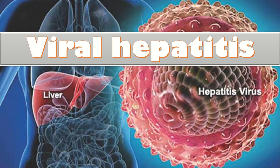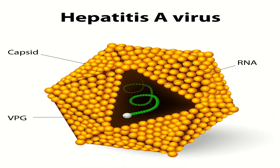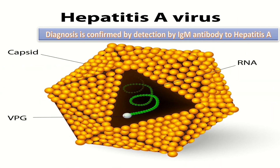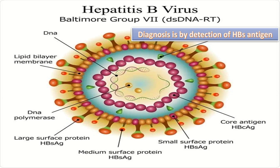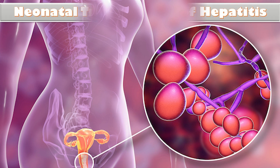Another important cause of jaundice in pregnancy is viral hepatitis. Hepatitis A virus infection is confirmed by detection of IgM antibody to hepatitis A. Hepatitis B virus is detected by HBsAg, along with other antigens and antibodies that help identify the type of infection. You can study all the serological markers of hepatitis B by clicking the info button in the top right corner of this video. Neonatal transmission of hepatitis mainly occurs at or around the time of birth through mixing of maternal blood with genital secretions.